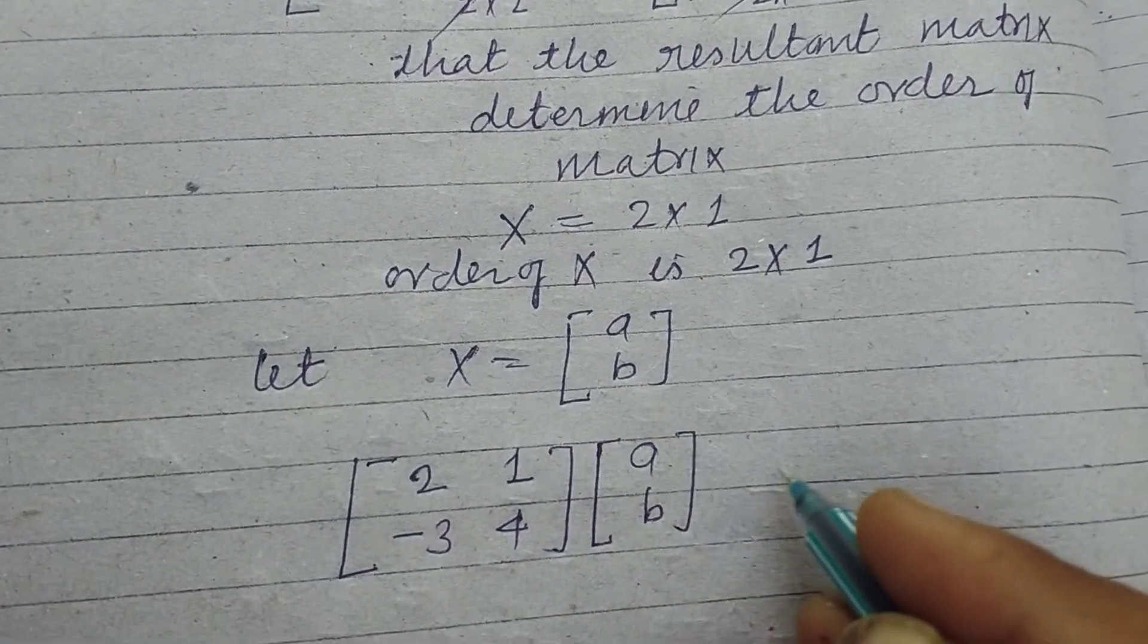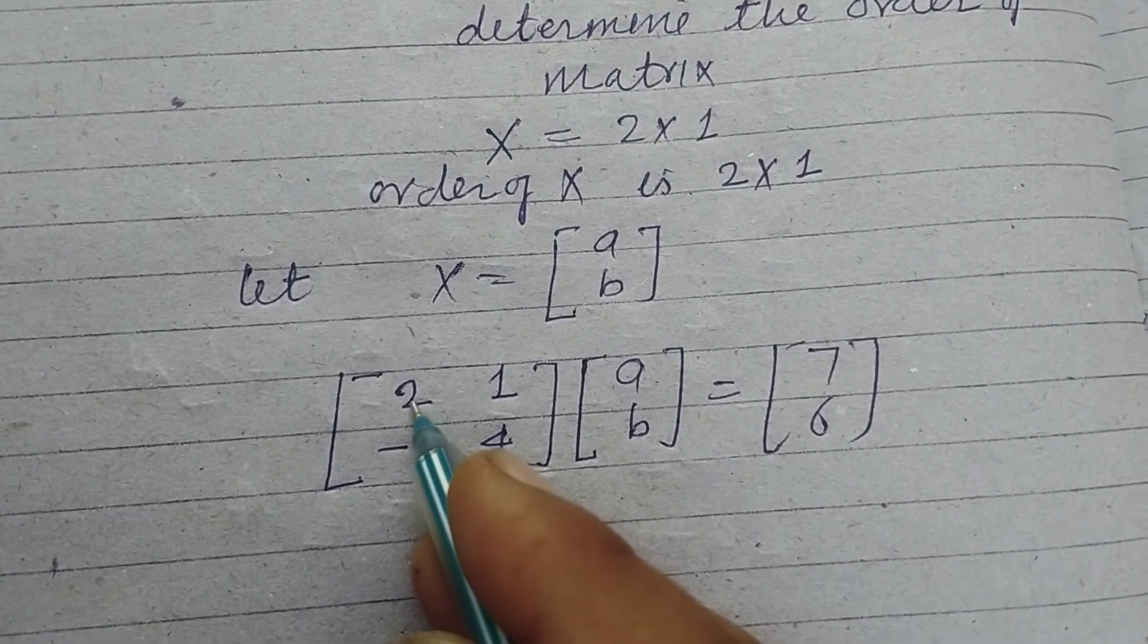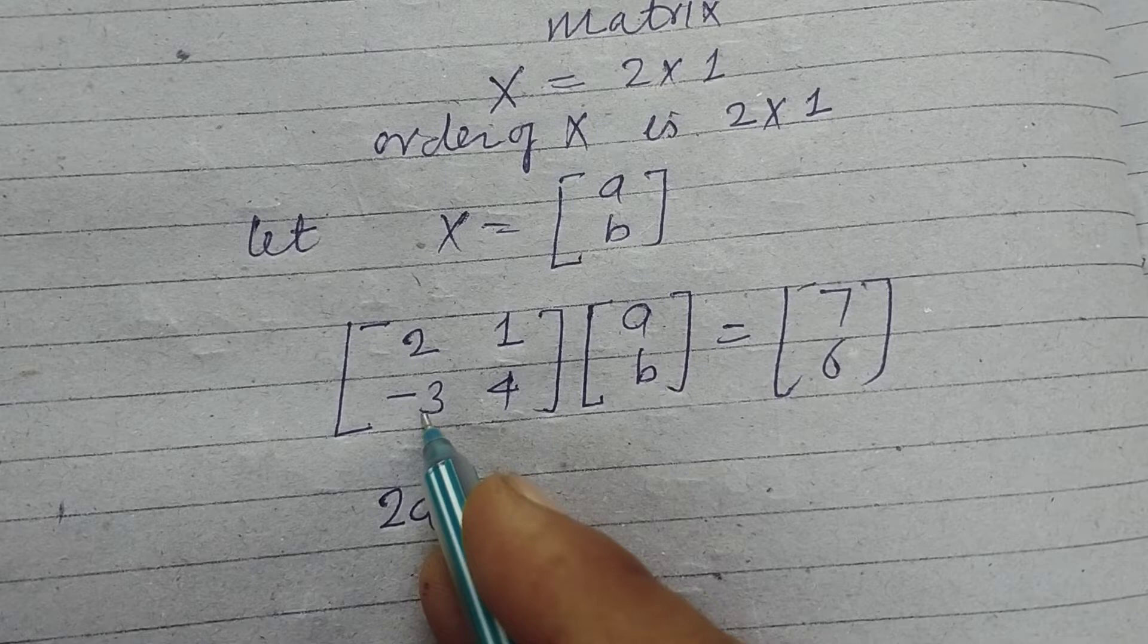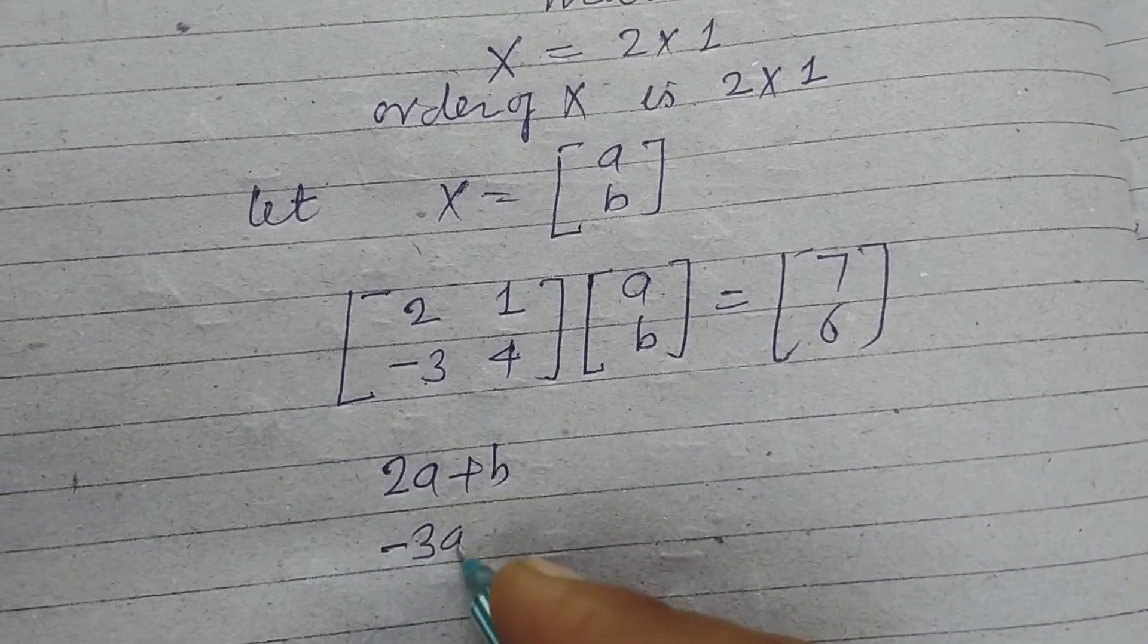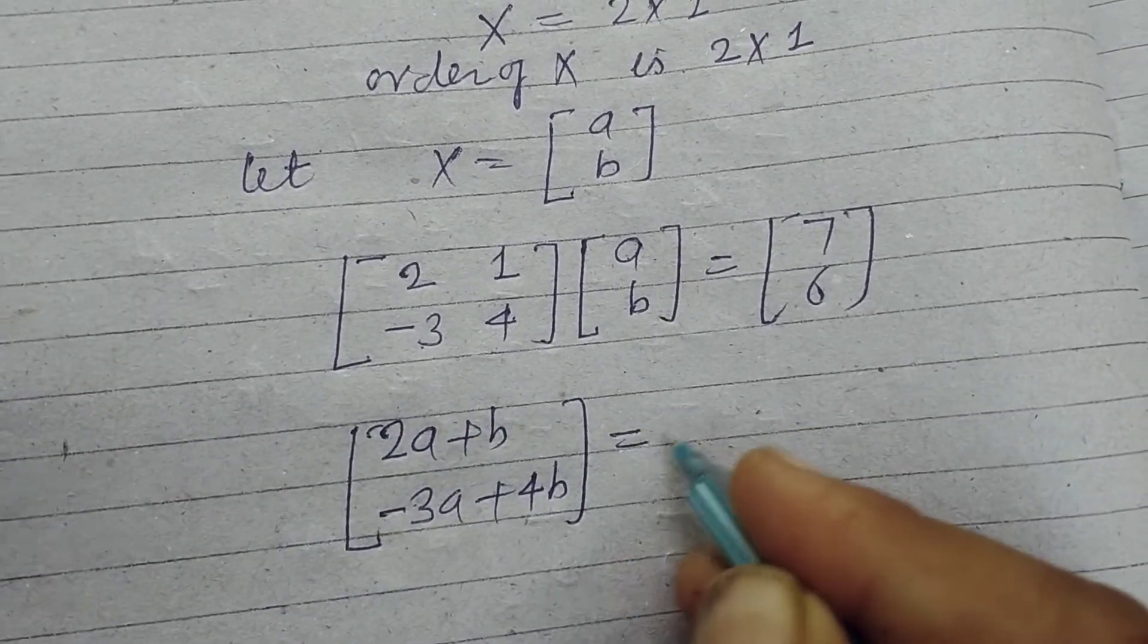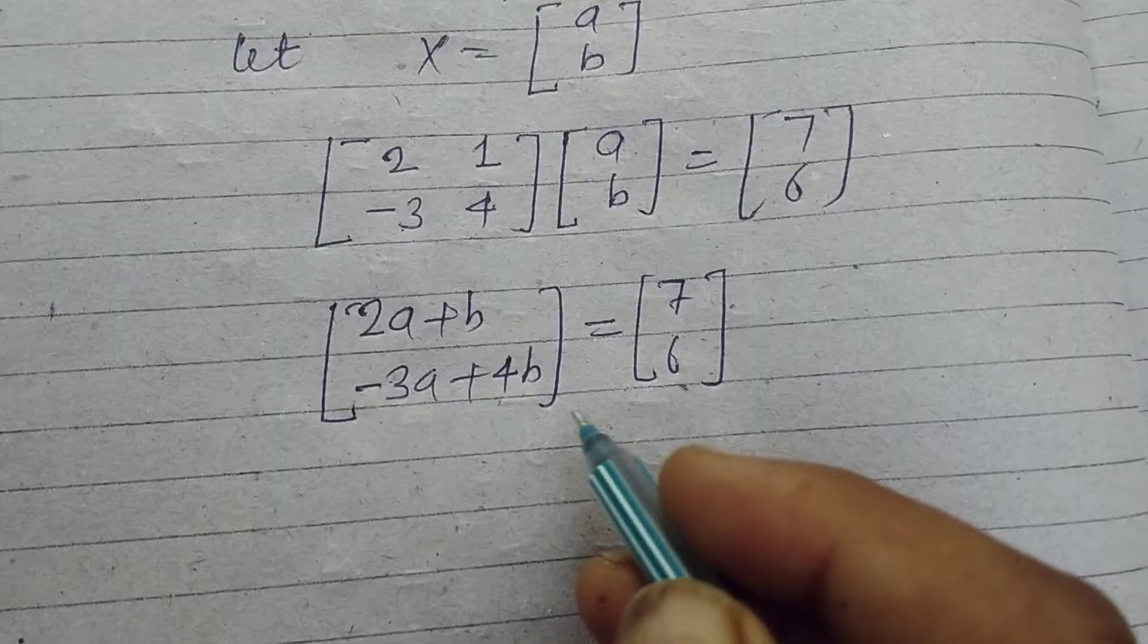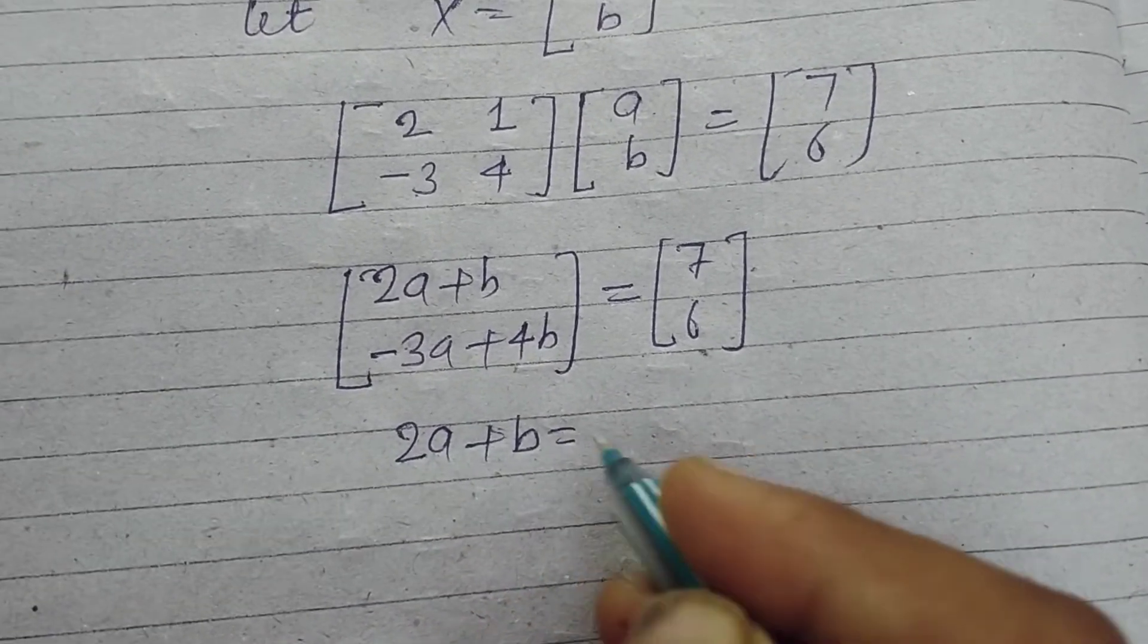When the first row is multiplied with this column, we get 2a plus b, and the second row is multiplied with the column: -3a plus 4b. We get the resultant matrix, its order is 2 by 1 which depends on the product of the matrices. Comparing the elements: 2a plus b equals 7.